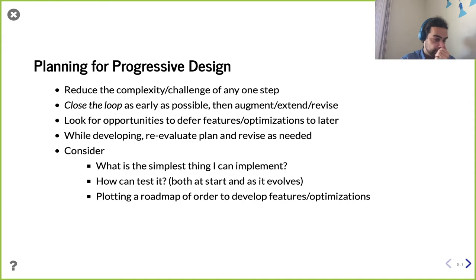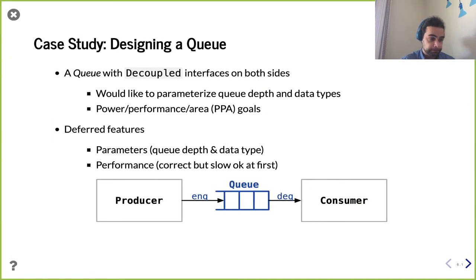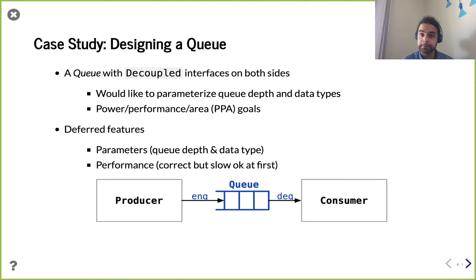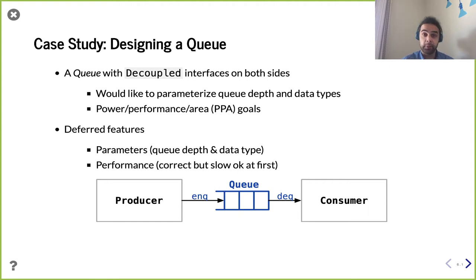Let's talk about designing this queue. Why are we talking about a queue? It's a nice component — there's a scope of internal microarchitectures that are simple enough to fit on slides and cover in one lecture, yet sophisticated enough that there are multiple microarchitectures to consider with actual trade-offs. As a reminder, we're talking about the queue like we saw in chisel.util — it has a decoupled interface on both sides: decoupled enqueue and decoupled dequeue. We want to parameterize how many entries there are and also parameterize the data type.